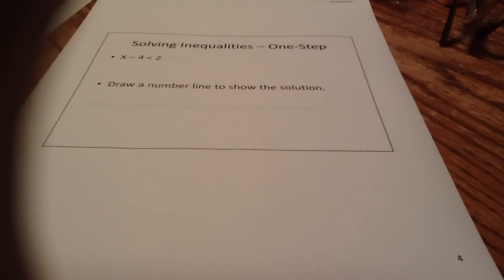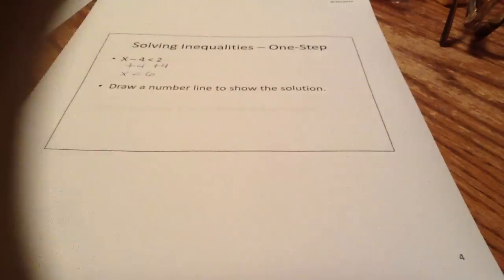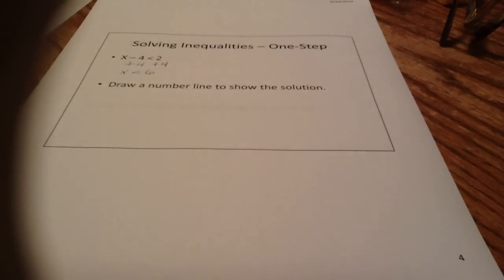Now let's talk about solving inequalities. These are one-step inequalities — pretty easy. We have x minus 4 is less than 2. They subtracted 4, so we need to do the opposite and add 4 to both sides. We get x is less than 6. Our solution is that any real number less than 6 will make this inequality true.